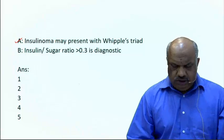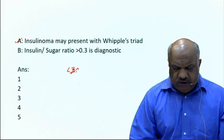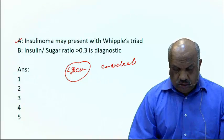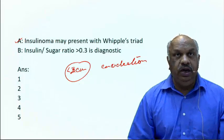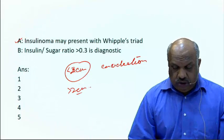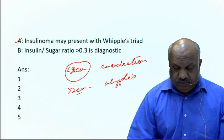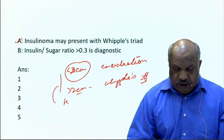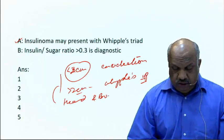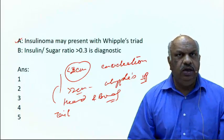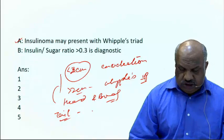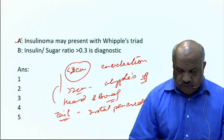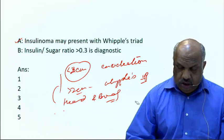Treatment depends on tumor size and location. For head and body tumors less than 2 cm, we perform enucleation. For head and body tumors more than 2 cm, we perform Whipple's operation. For tail tumors, regardless of size, we perform distal pancreatectomy in all cases.